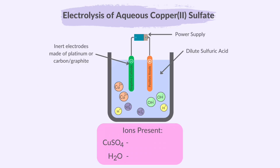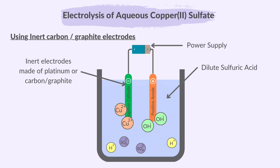What are the ions present in aqueous copper sulfate? We've got Cu²⁺ and SO₄²⁻ ions. Since the electrolyte is aqueous, the presence of water means there are H⁺ ions and hydroxide ions as well. First, using inert electrodes, Cu²⁺ and H⁺ will both be attracted to the cathode, but only the copper ion will be discharged because copper is less reactive than hydrogen. So at the cathode, copper ions gain electrons and are reduced to form copper metal.